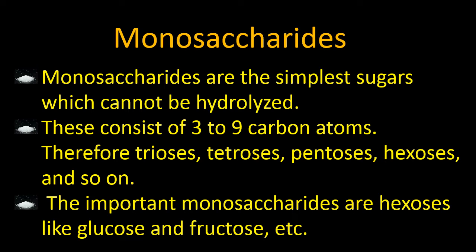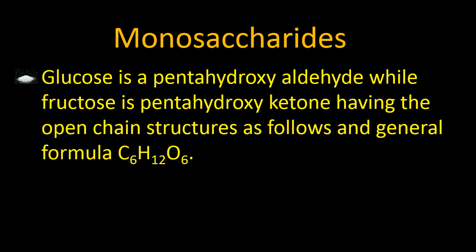The important monosaccharides are hexoses like glucose and fructose. Glucose is the simplest sugar, the simplest form of energy source which our body uses; it is present in meat, rice, wheat, and other cereals. Both glucose and fructose have six carbon atoms each, but the difference is in the functional group. Fructose is present in fruits. Glucose is a pentahydroxy aldehyde while fructose is a pentahydroxy ketone, both having the open chain structure and general formula C6H12O6.